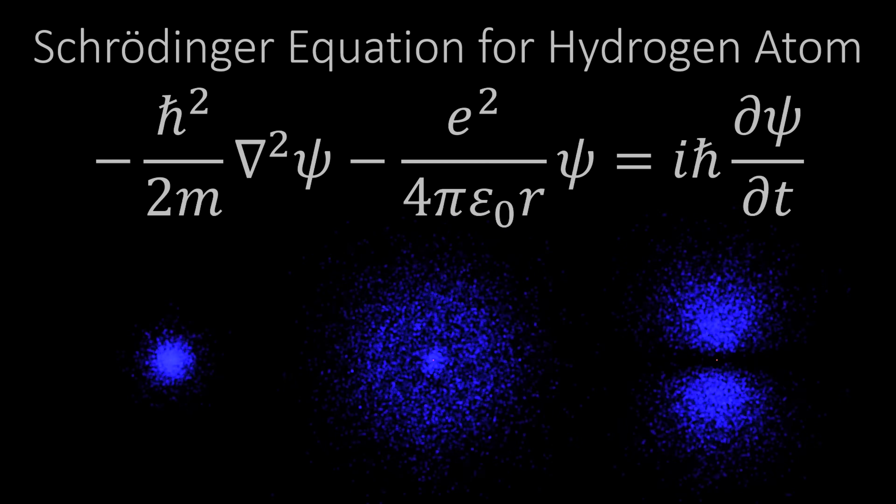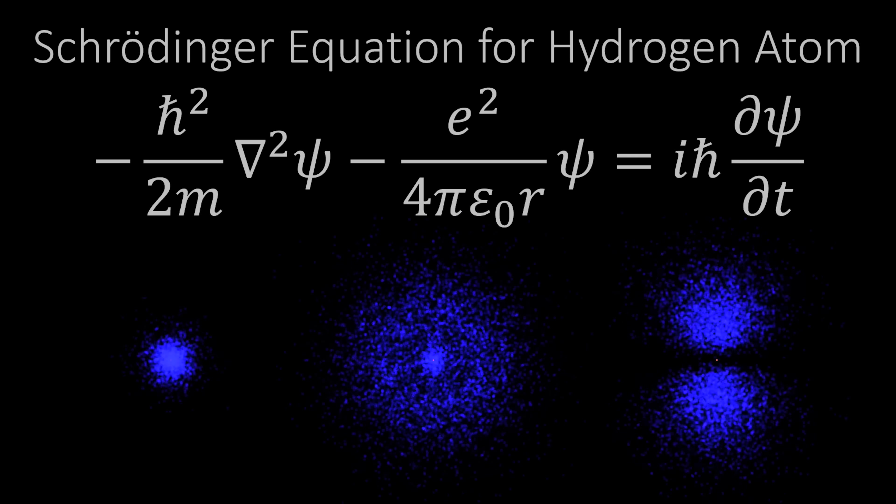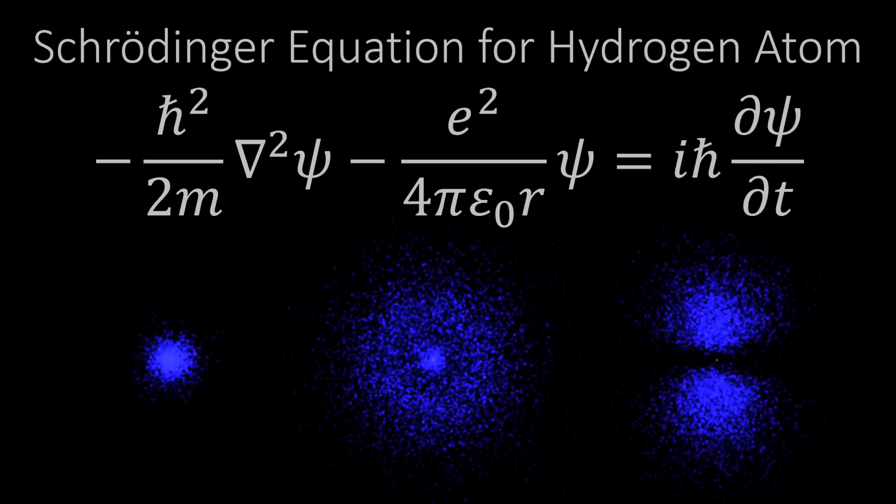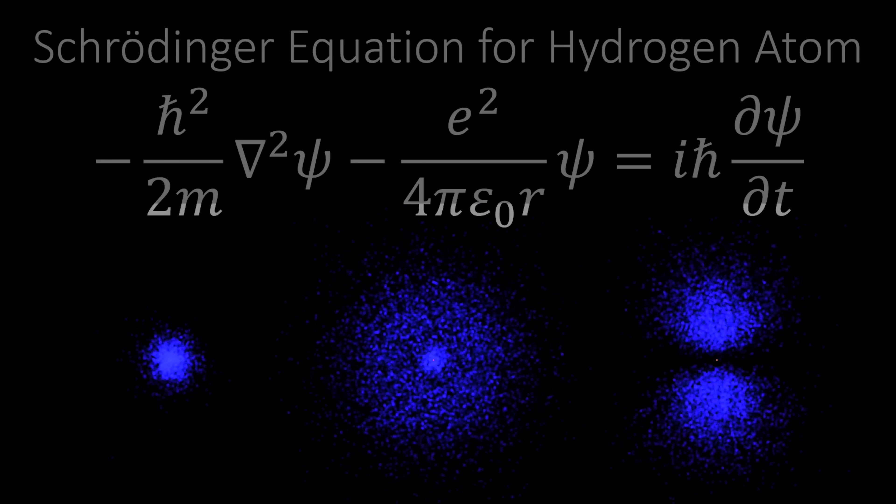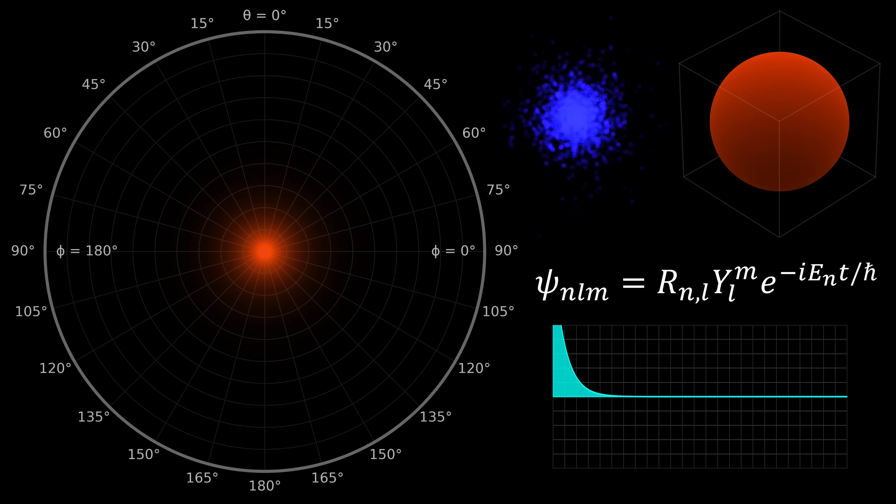I want to tell you why the Schrödinger equation is not compatible with special relativity. In part two of the hydrogen video, we saw that the Schrödinger equation can give us a really good idea of what's going on inside a hydrogen atom.